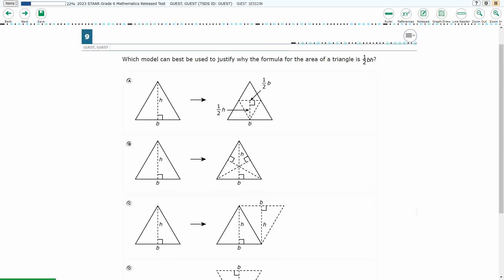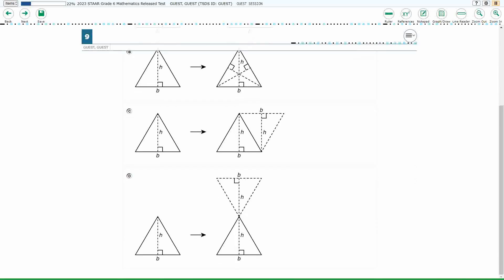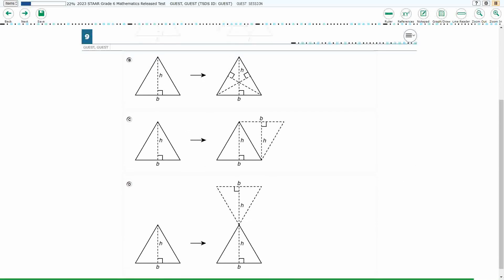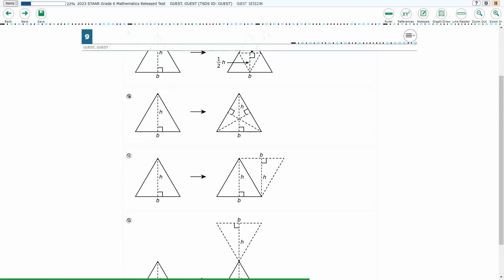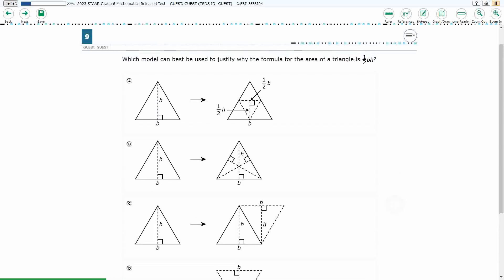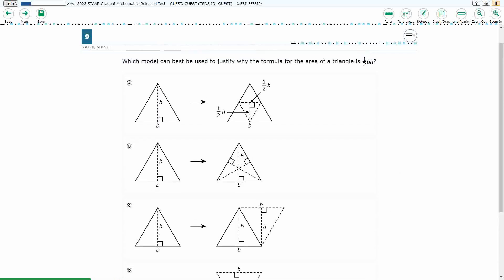We've got four different models and if you take a look, the left side of each model is exactly the same. We've got this triangle, we've got a base, we've got a dotted line for the height, but we're looking to see which of these can be used to justify why the formula for area of a triangle is one-half base times height.